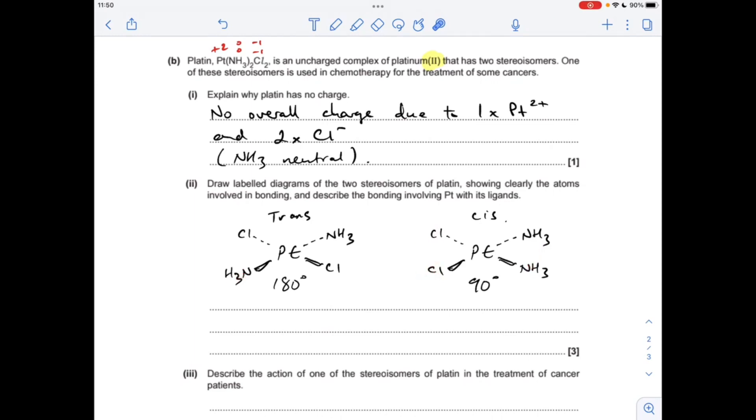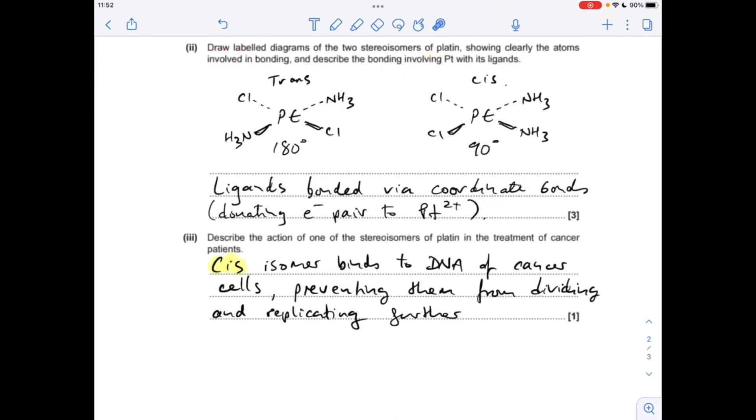There's the answer about the bonding: ligands are bonded via coordinate bonds, you could say dative covalent bonds, by donating an electron pair to the platinum 2+. Finally, the action of one of the stereoisomers of platinum in the treatment of cancer. It's the cis isomer that's used in cancer treatment. It's the correct shape to bind to the DNA of cancer cells and that prevents them from dividing and replicating any further.